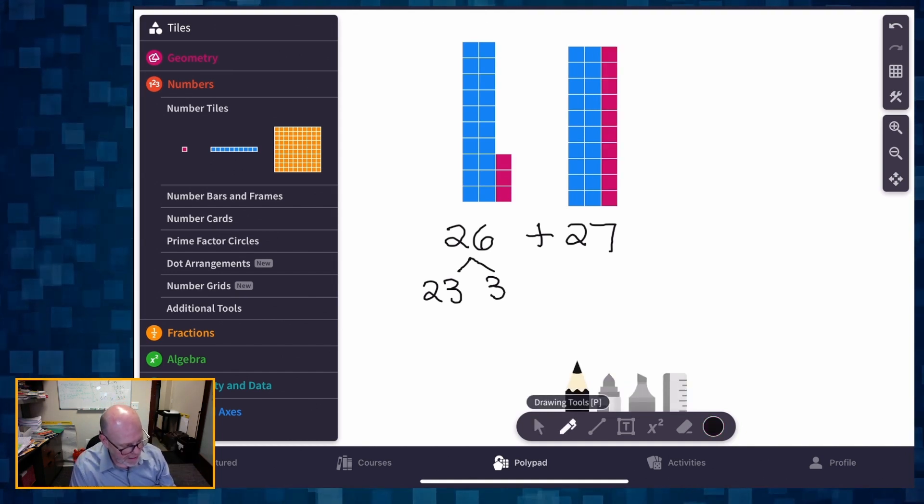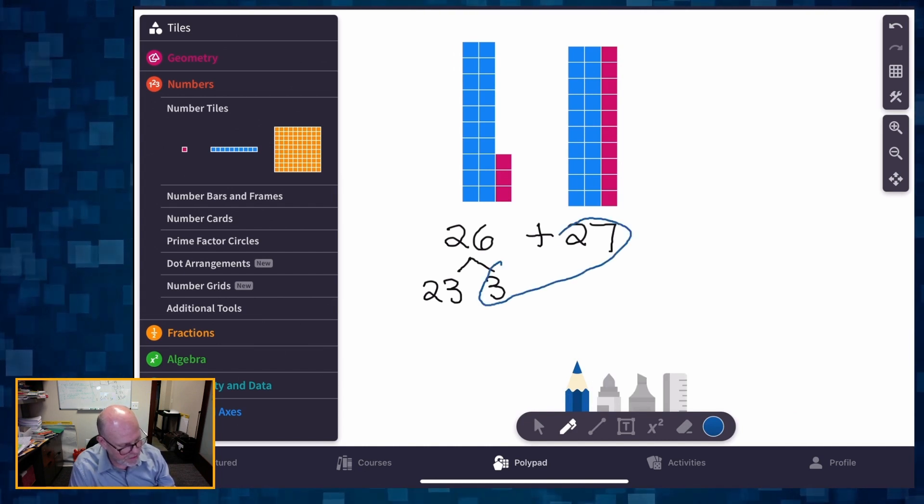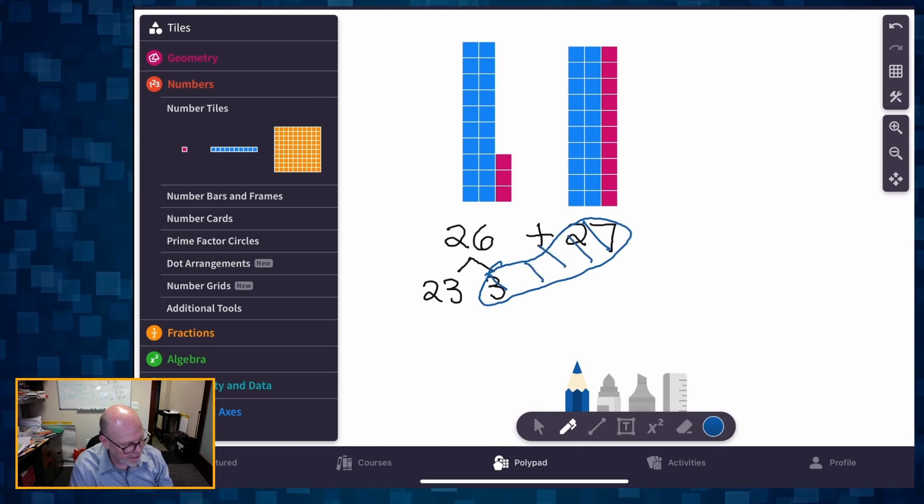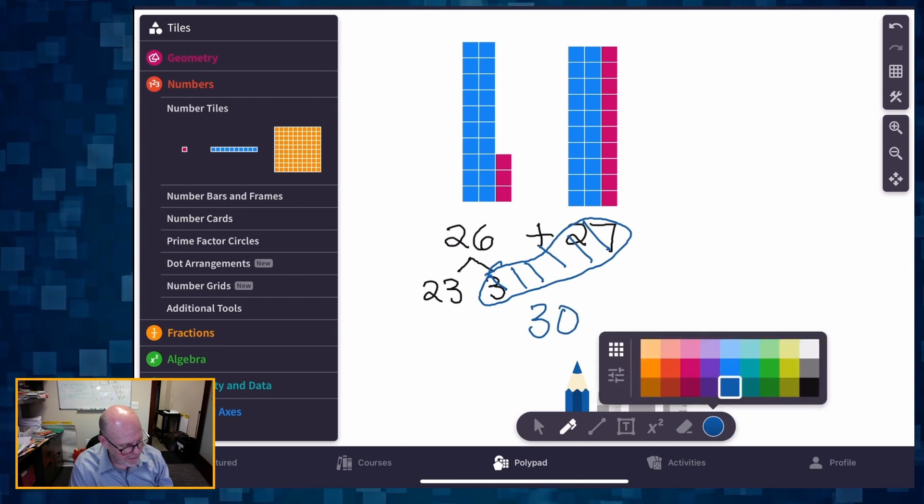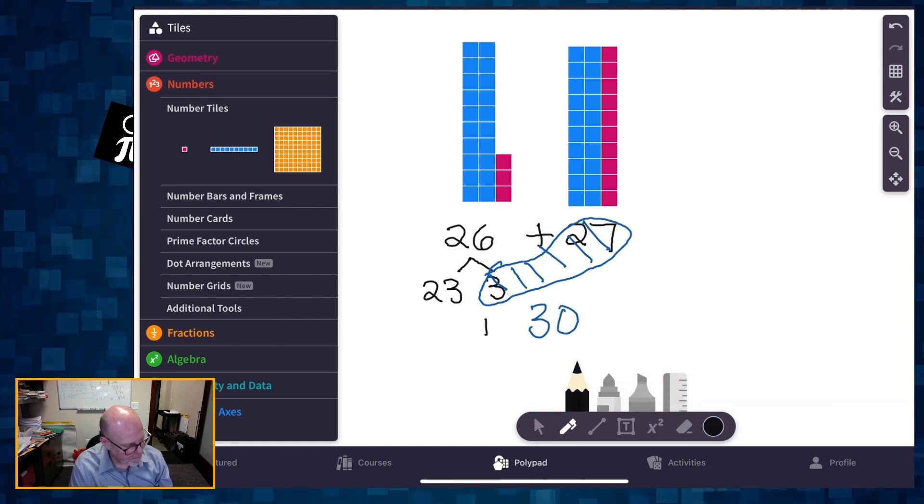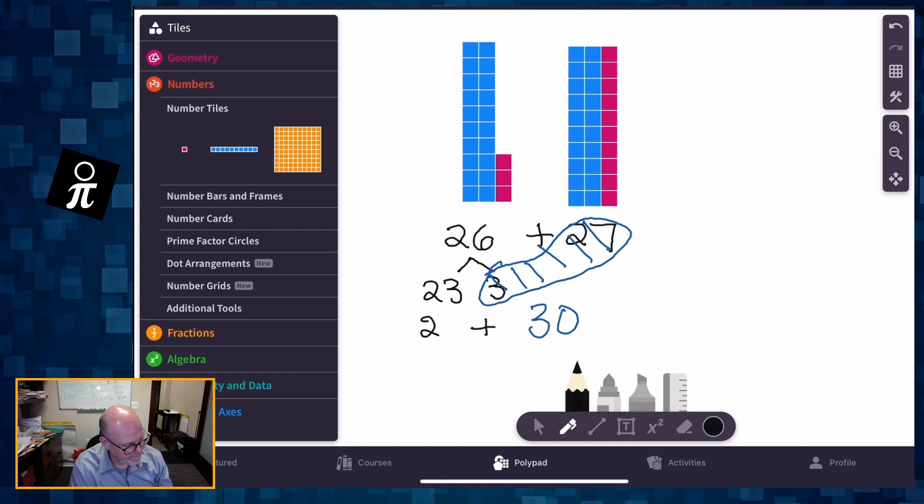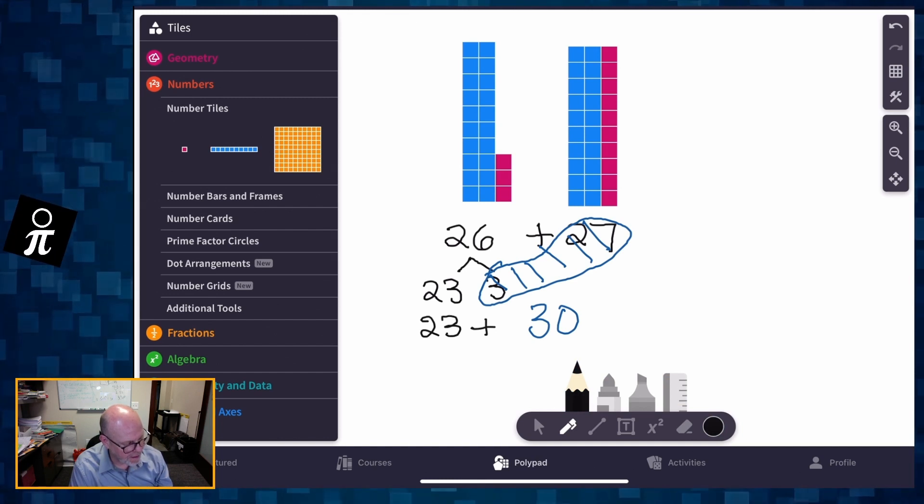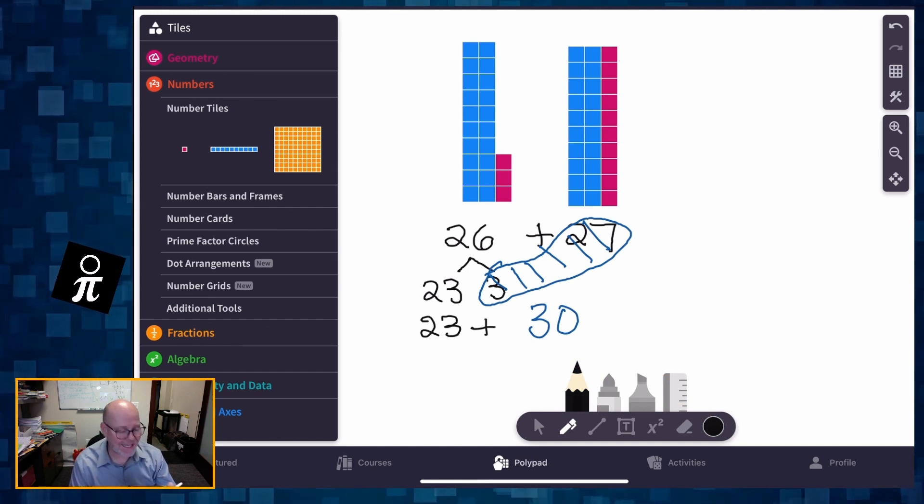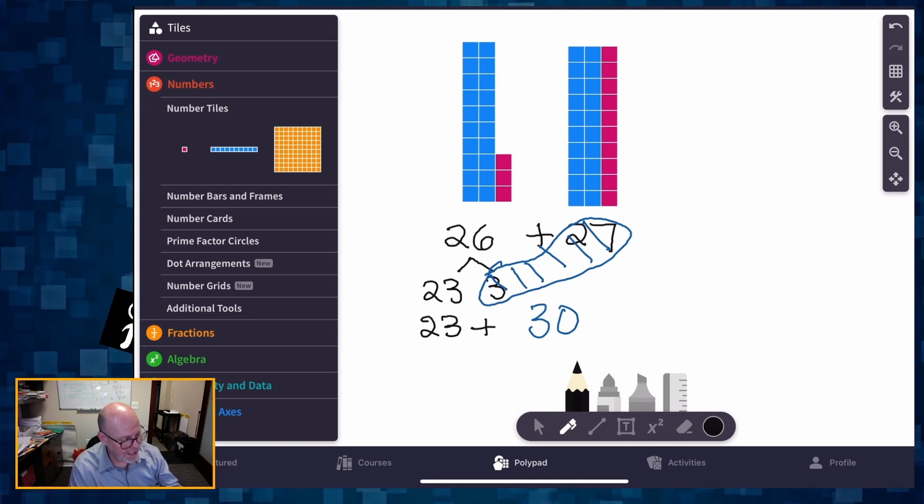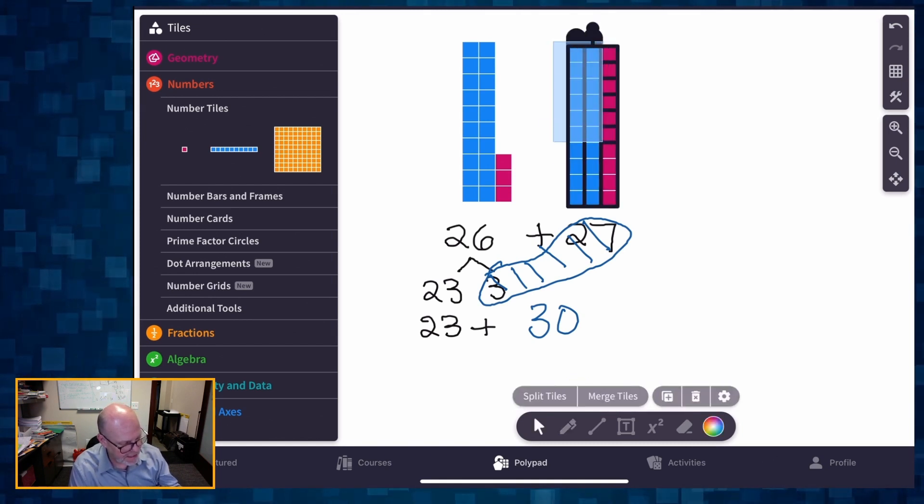So what does that look like? That looks like down here, it looks like I'm going to take this 3, give it to the 27, and that makes this whole thing, it makes that 30 plus 23 right there. And now I can see that, what do I have all together? Well, I can see that I can take these 30, these three tens, move them over here.